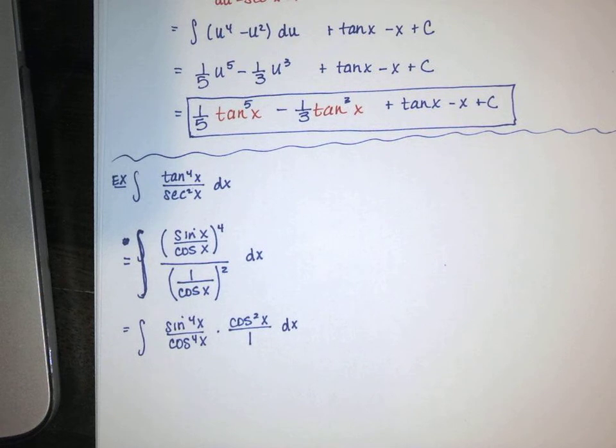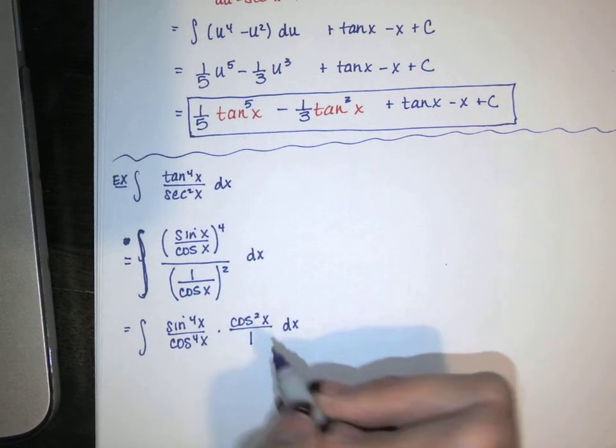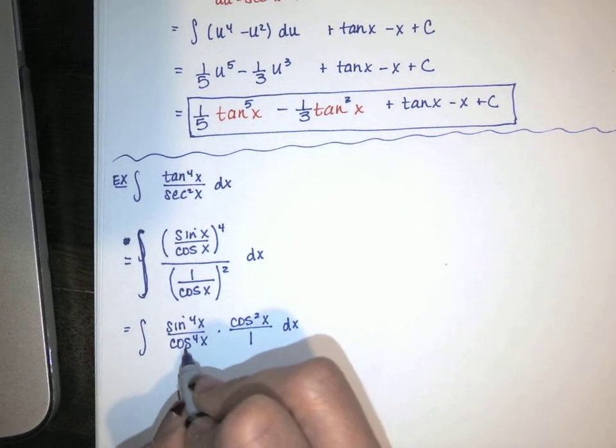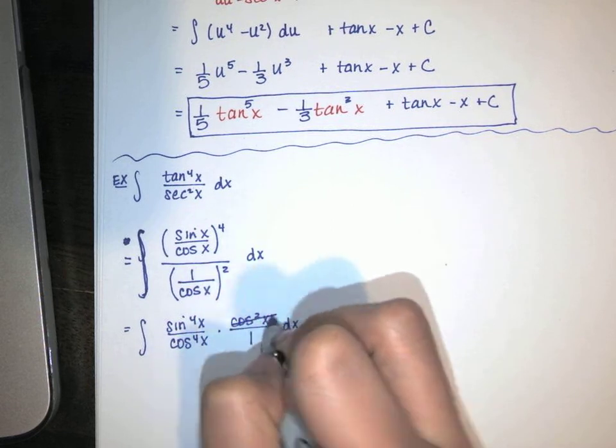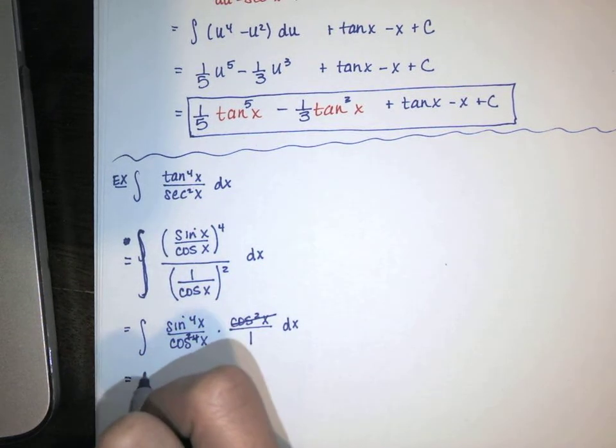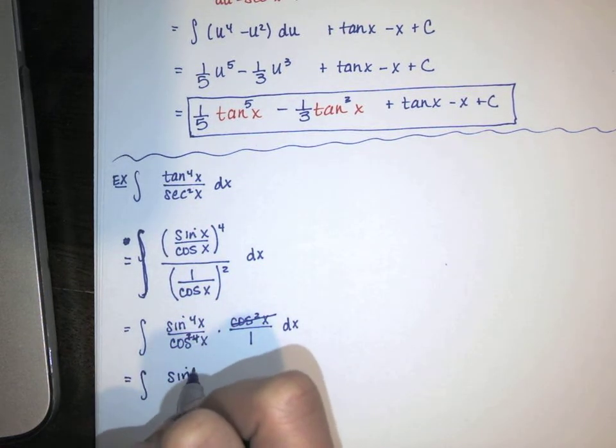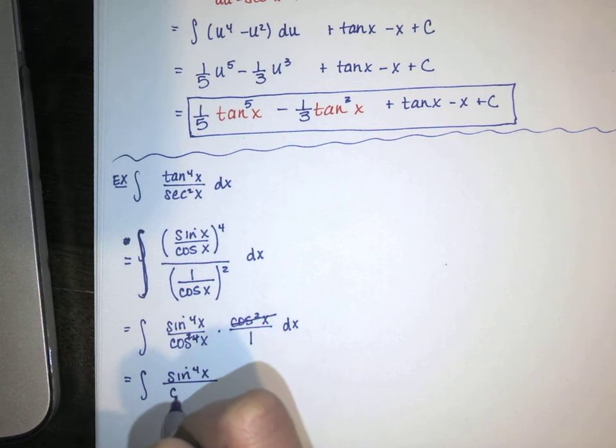Now you remember from algebra that dividing by a fraction is multiplying by the reciprocal. So most of the time, if I'm in class, I would skip this step and just write this numerator as sine to the fourth over cosine to the fourth. And then take the denominator, flip it, and multiply. So I square the numerator and denominator here first, so that's 1 over cosine squared. Then I flip it. So that's cosine squared over 1. And so we're here.